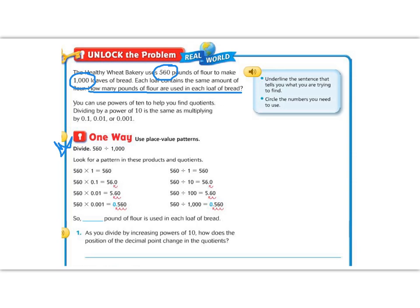And the first way we're going to do this is by using place value patterns. This looks similar to what we did with multiplying by decimals in the unit before this. So if we start here, 560 times 1 is 560. Nothing changes.